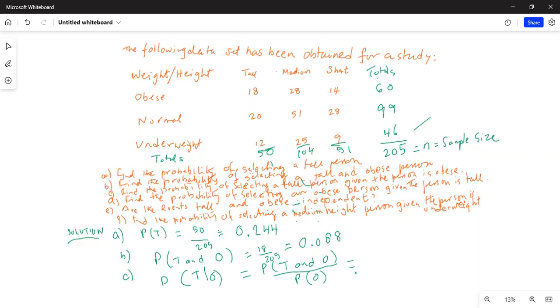Tall given the person is obese. A quick and easy way to do it is find the total of the obese, that is obese row, which is 60. Out of which, how many are tall is 18. So it's 18 divided by 60. 18 divided by 60 on my calculator is 0.3.